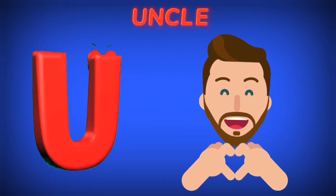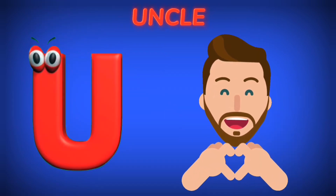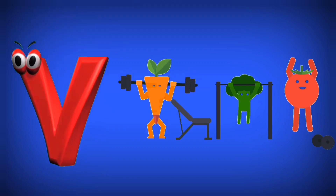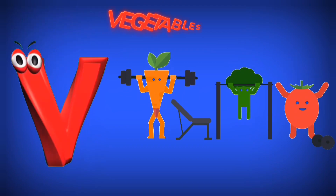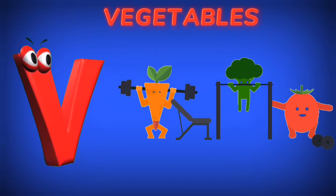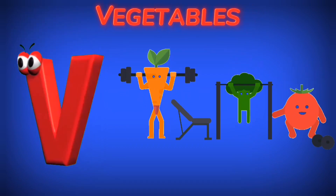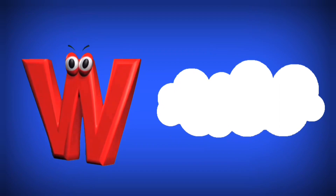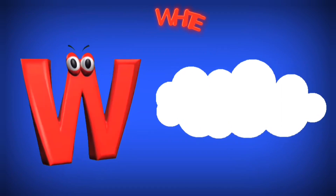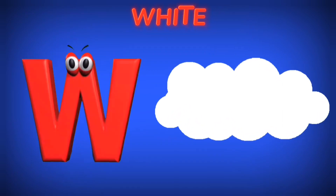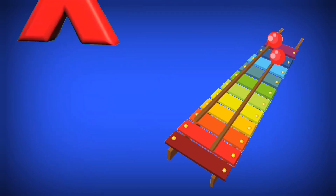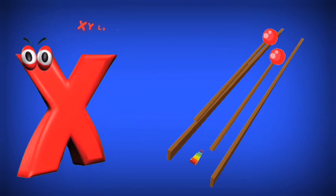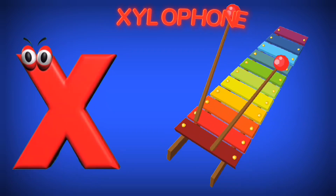U is for Uncle. V is for Vegetables. V, V. W is for White. Wa, Wa.